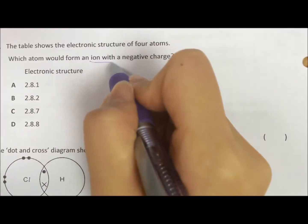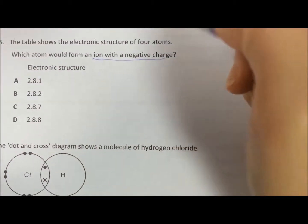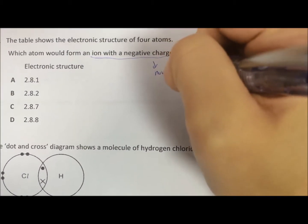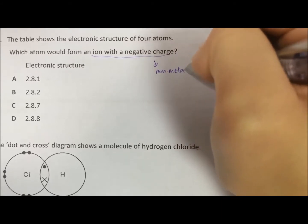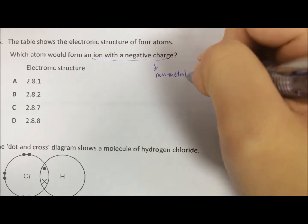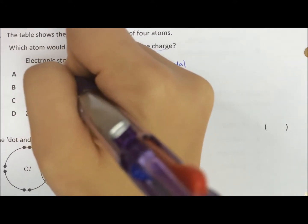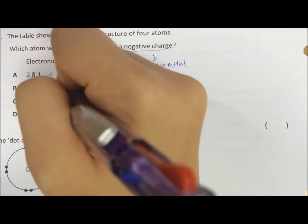Okay, question 5. Ion with a negative charge. So negative charge means it is a non-metal. Group 5 is 3-, group 6 is 2-, group 7 is 1-.